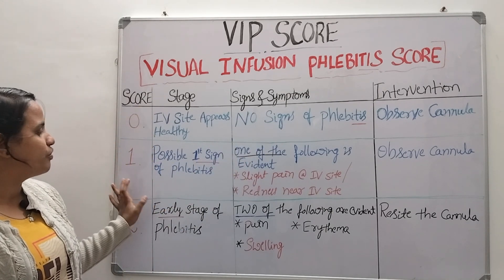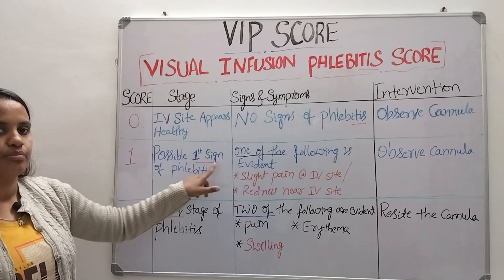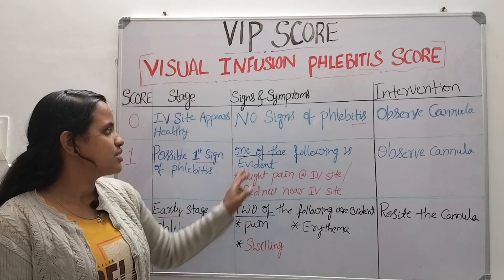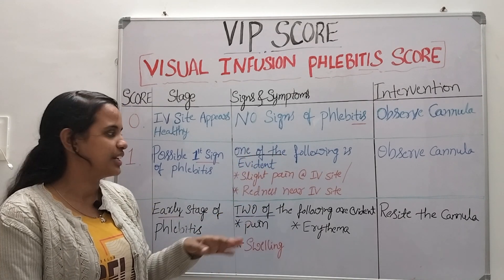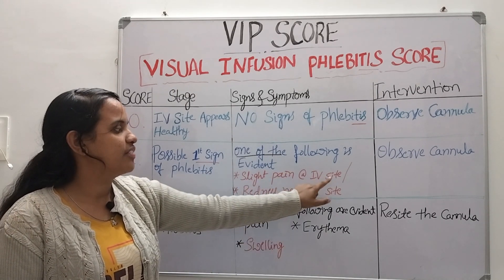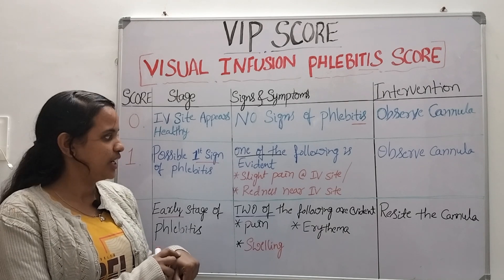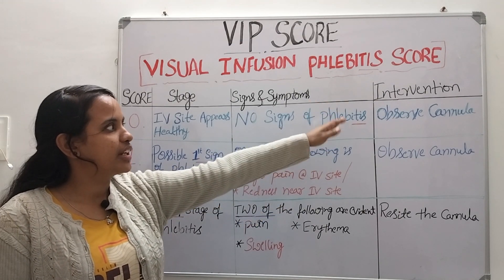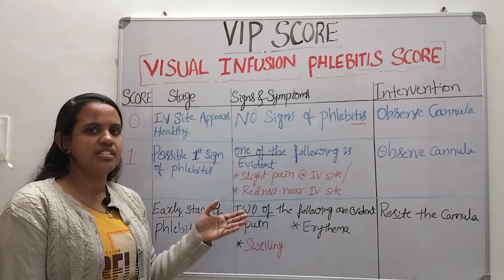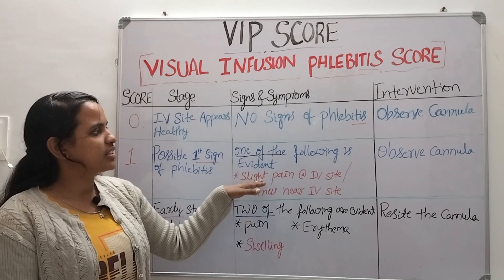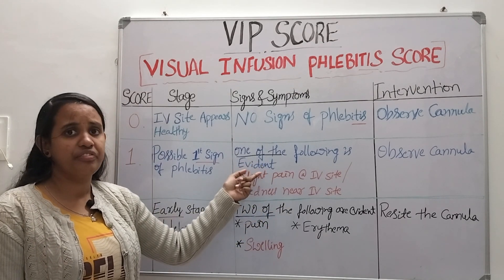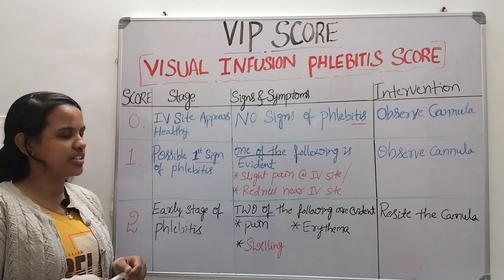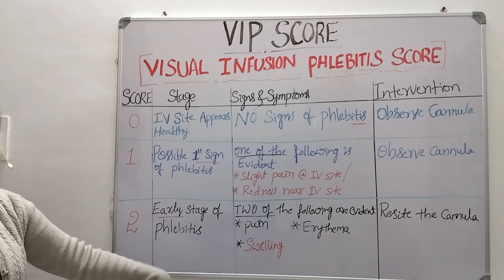When we give score 1, it means there is a possible first sign of phlebitis. One of the following will be evident — not both, any one: slight pain at the IV site when touched, or redness near the IV cannulation site. Our intervention is to observe the cannula. Changing is not mandatory, but we should avoid progression to further stages. If it progresses to stage 2, we re-cannulate the site.